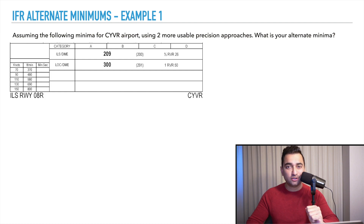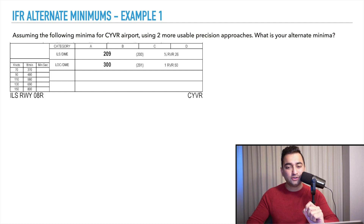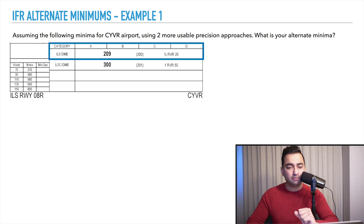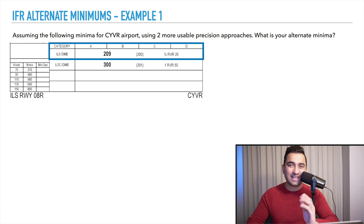Let's look at the first example in alternate weather minimums planning. Assuming the following minima for the Vancouver airport using two or more usable precision approaches, what is your alternate minima? Because it says precision approach, we're looking at the ILS minimums, and the minimums are the same regardless of the aircraft approach speed category.